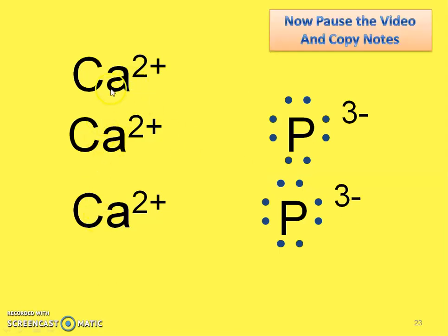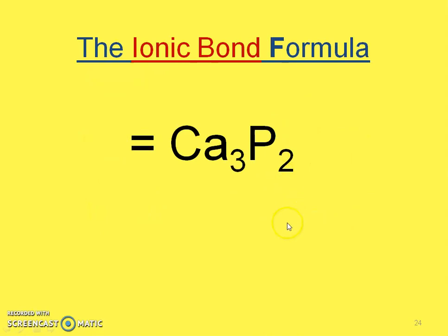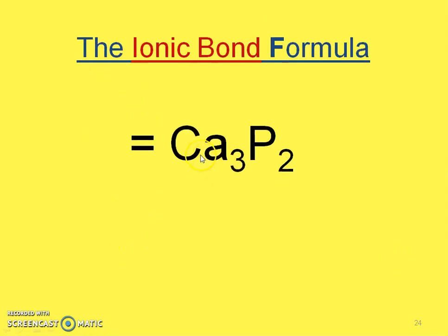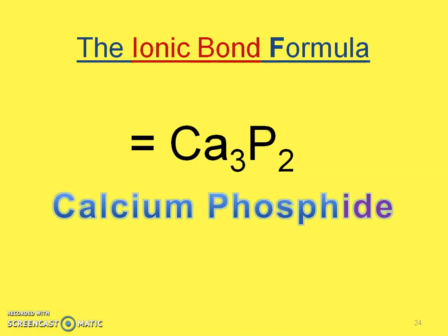Notice we need three calciums in order to satisfy two phosphoruses. I'm going to show you a little shortcut — this was just to show you how complicated it can be. It shows you how three plus-twos have to equal the two minus-threes. A compound has to be neutral — there can't be a charge in a compound. So there are three calcium atoms and two phosphorus atoms in order for this compound to be neutral. The name is going to be calcium phosphide.